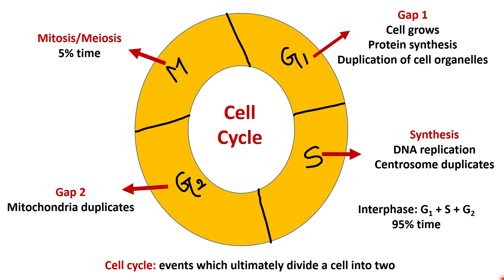So first of all, what is Cell Cycle? Cell Cycle consists of certain events which ultimately divide a cell into two. When a cell divides into two, its DNA as well as all the cell organelles need to be divided into two. That will happen in the Cell Cycle.